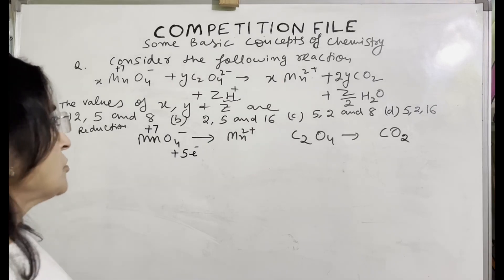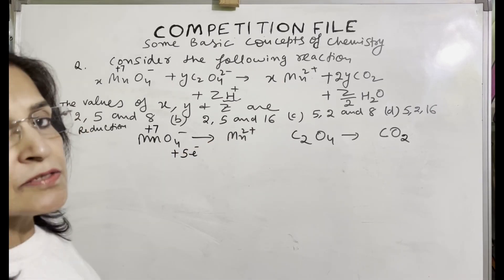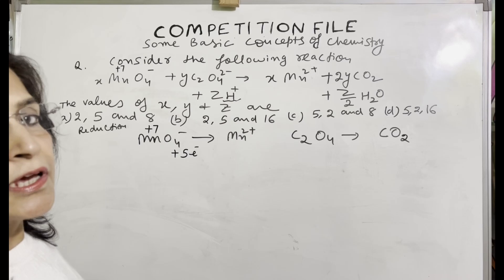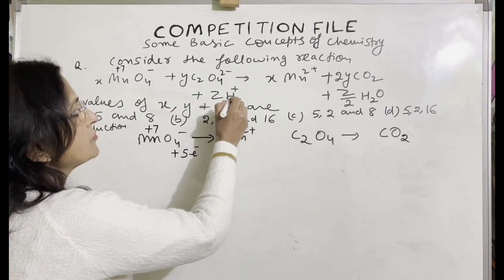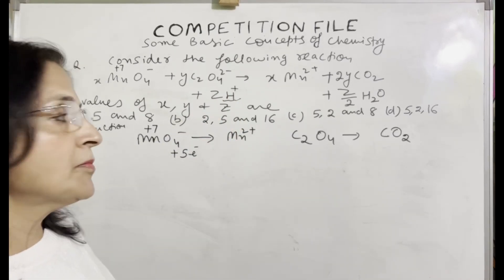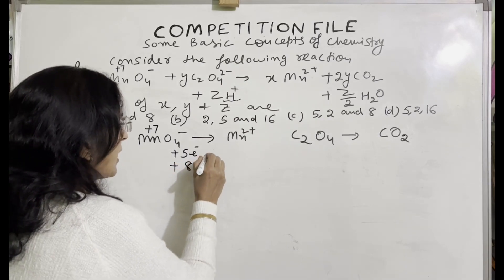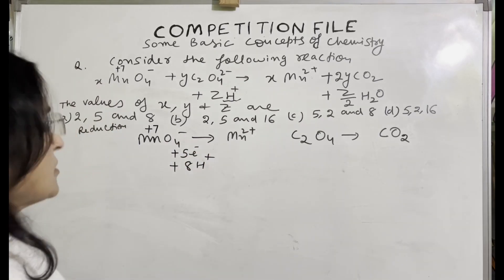Now we will balance the charge. Here it is minus 6, here it is plus 2. To balance the charge, we will use H plus. This is an acidic medium, as we can see from the equation. So we will add 8 H plus here. So the charge is balanced.